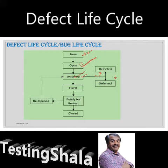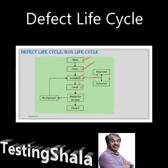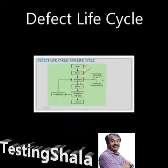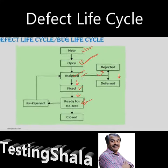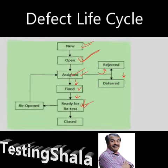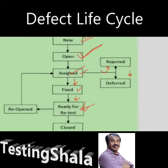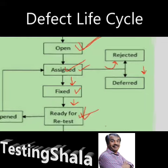If the defect is a genuine issue that needs to be fixed, once the developer marks it as fixed, they will assign it to 'ready for retest.' The tester will then pick up those defects, take a new build, and test them. If the defect is fixed and working, the tester will mark it as 'closed.'